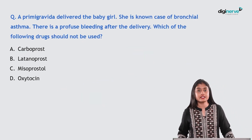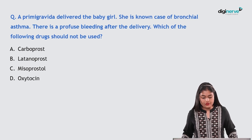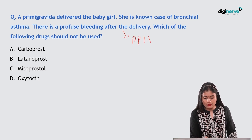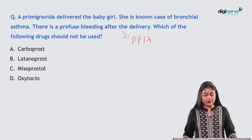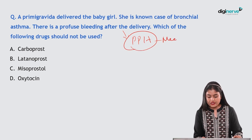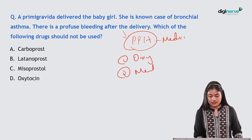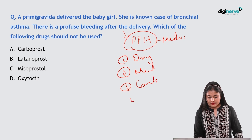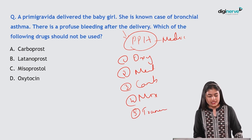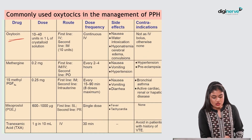Next question: a primigravida with known bronchial asthma delivered a baby girl and is now having profuse postpartum hemorrhage. Which drug should NOT be used? The common uterotonicss for PPH management are oxytocin, methylergometrine (methergine), carboprost, misoprostol, and tranexamic acid.